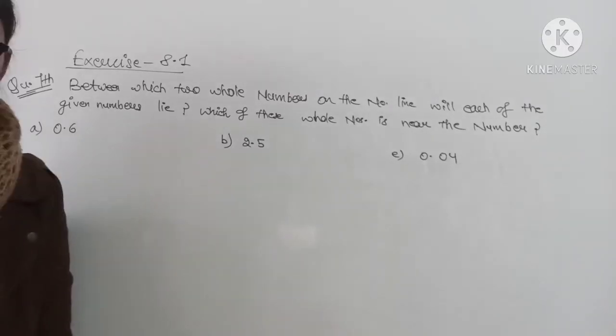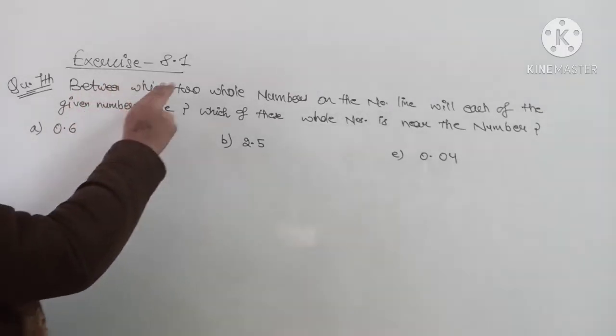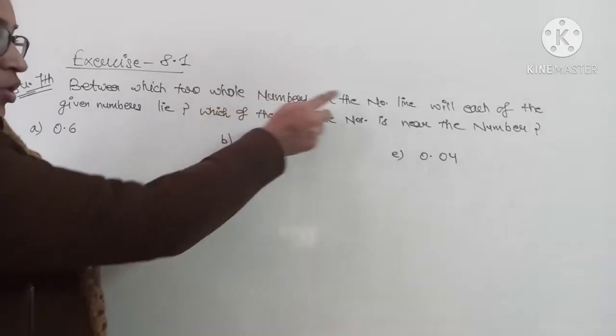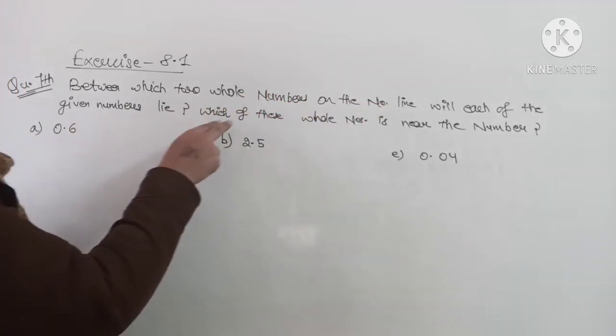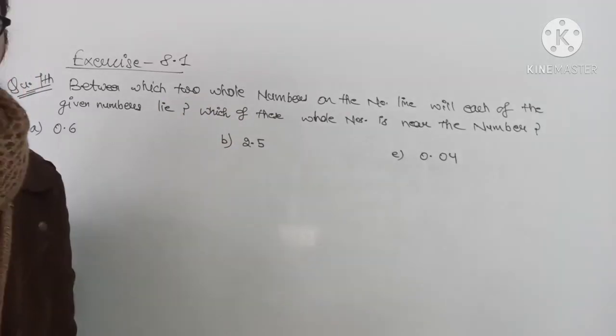Question number 7 of exercise 8.1 is: between which two whole numbers on the number line does each of the given numbers lie, and which of these whole numbers is near the number?